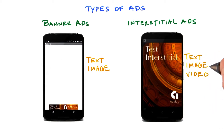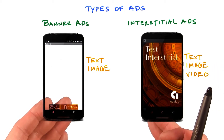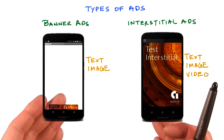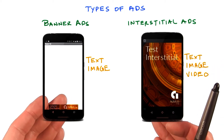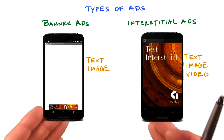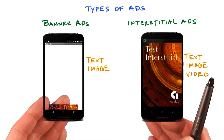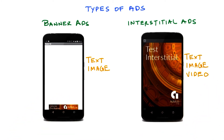In addition to text and image ads, interstitial ads can also show video content. These two types of ads, banner ads and interstitial ads, are the ones that we will look at in this lesson.